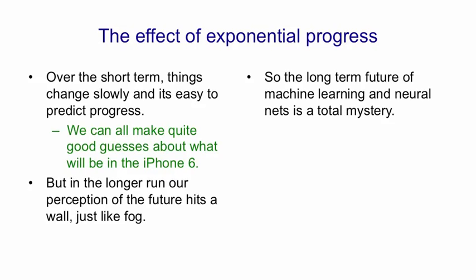So the long-term future of machine learning and neural nets is really a total mystery. We've no idea what's going to happen in 30 years' time. There's just no way to predict it from what we know now, because we're going to get exponential progress.